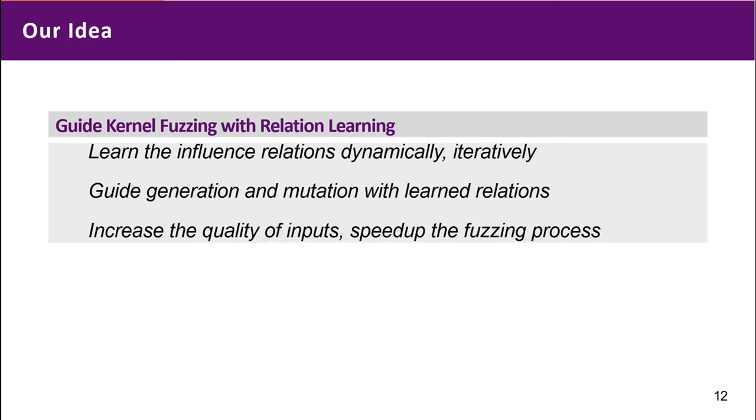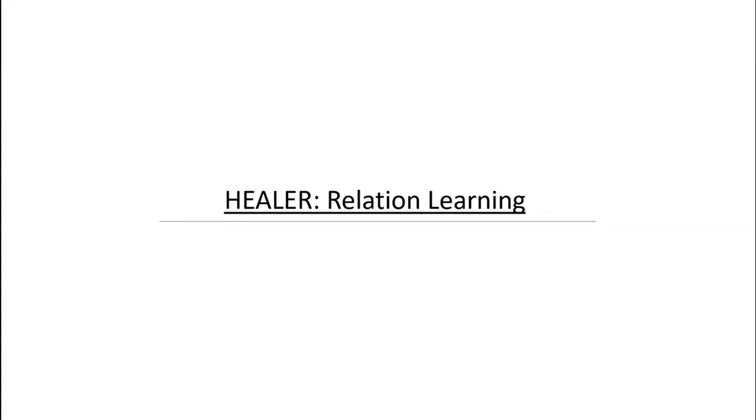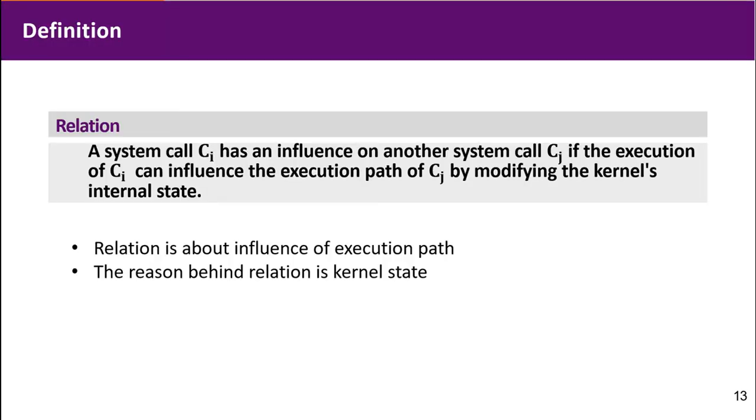So that we can increase the quality of inputs and speed up the fuzzing process. Here is the definition of relation. We need to focus that relation is all about the influence of execution path, and the reason behind relation is the kernel state.